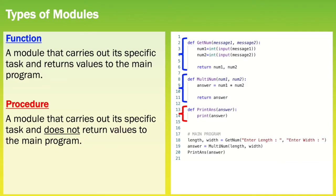No matter what programming language you choose, the following applies to every language that has modularity. There are two different types of modules: functions and procedures. A function is a module that carries out a specific task and then returns values to the main program. Looking at the screen, we have get_num — we know it is a function because it returns the values num1 and num2 to our main program. We then have multi_num, which is also a function because it returns the answer to the rest of the program.